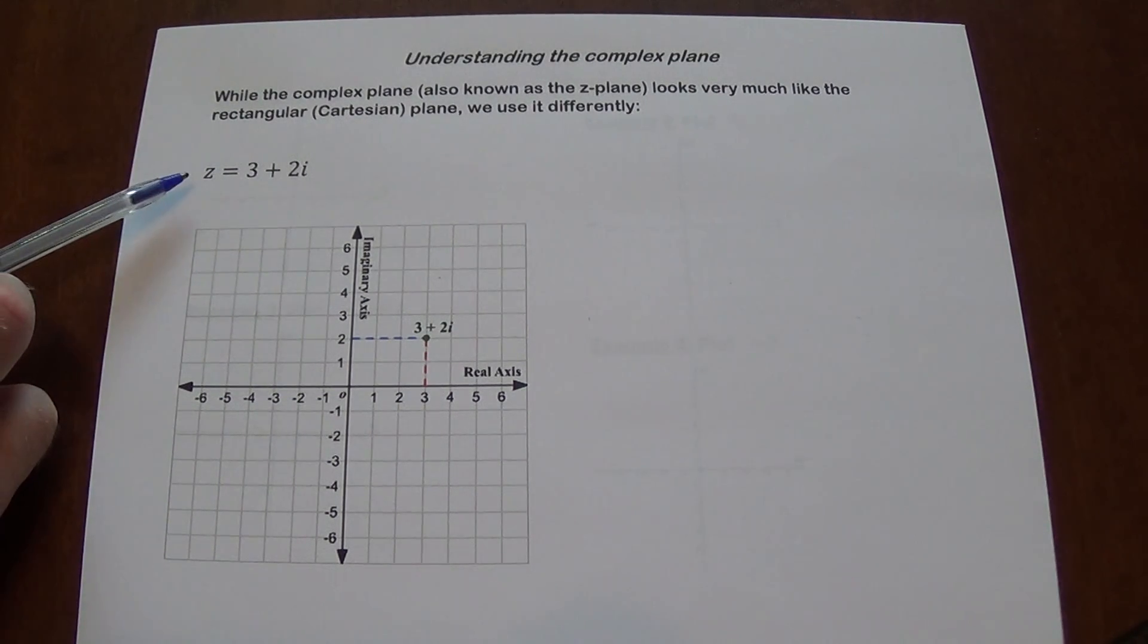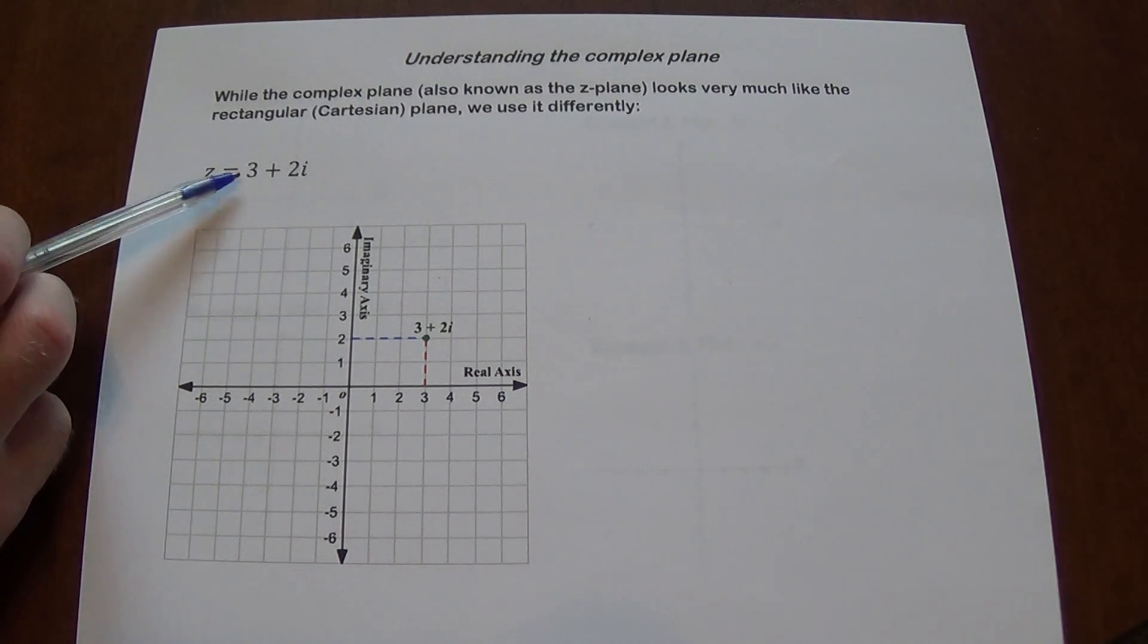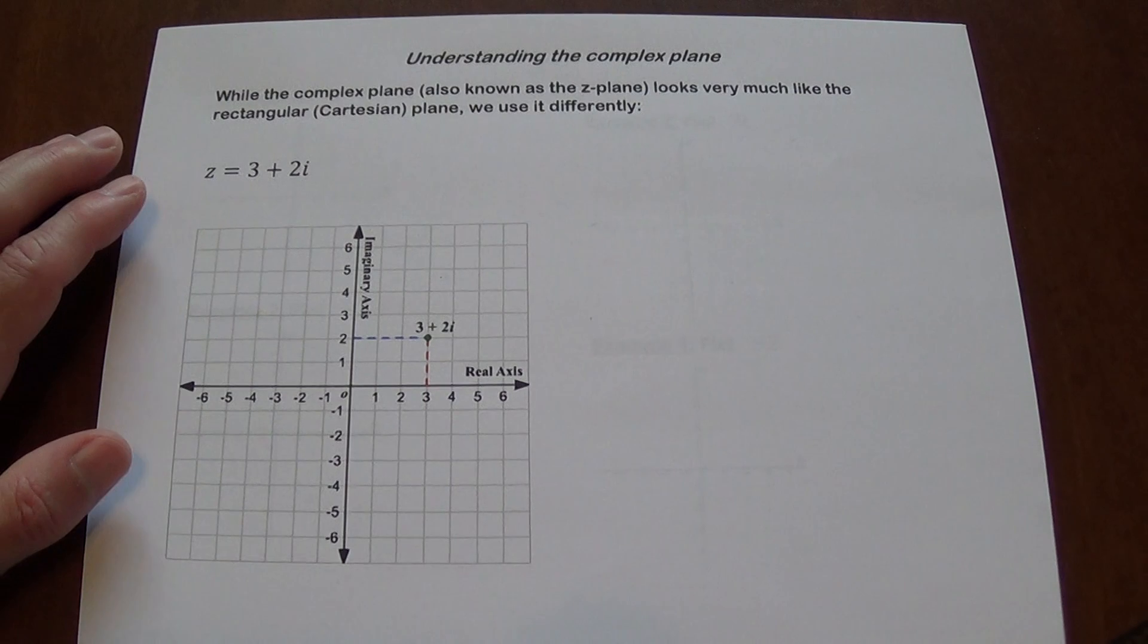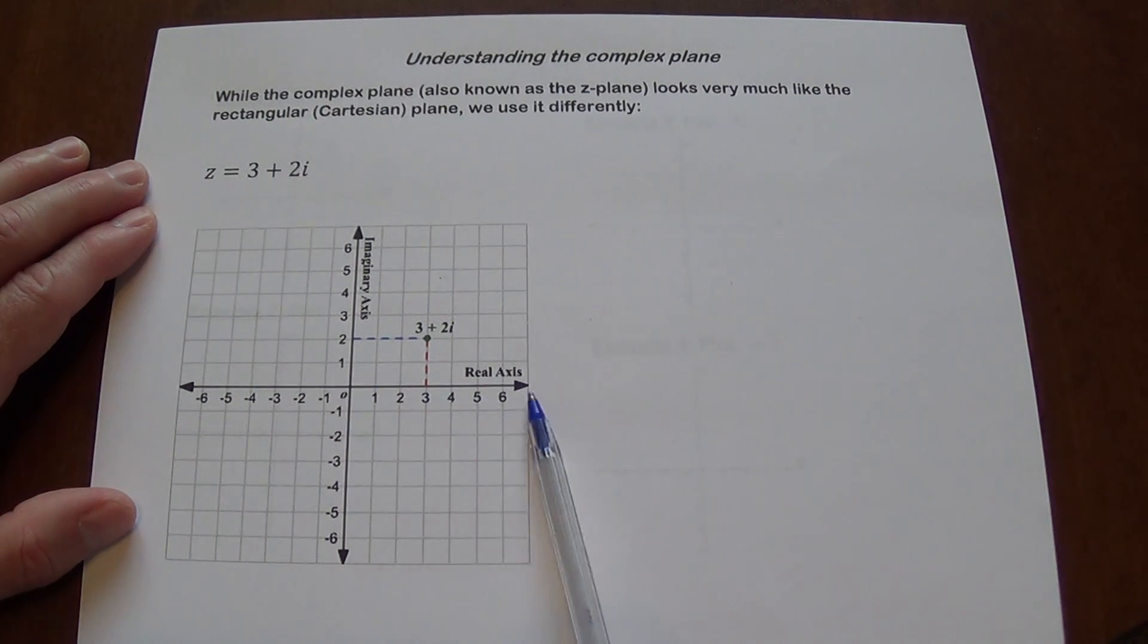If you have a complex number, we usually represent complex numbers by the letter z. So z equals 3 plus 2i. We have two axes: a horizontal axis, which is the real axis, and the vertical axis, which is the imaginary axis.